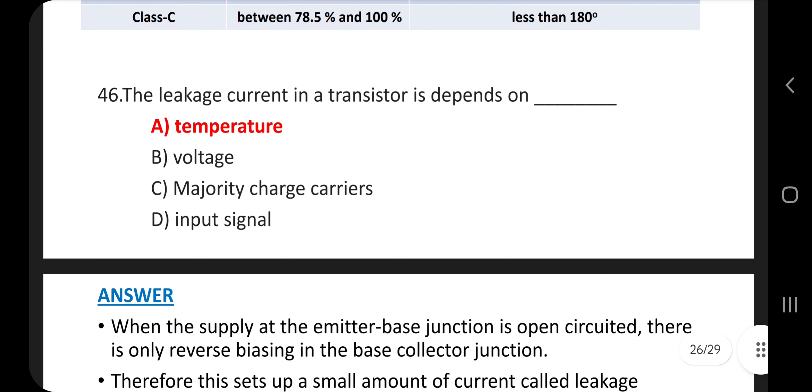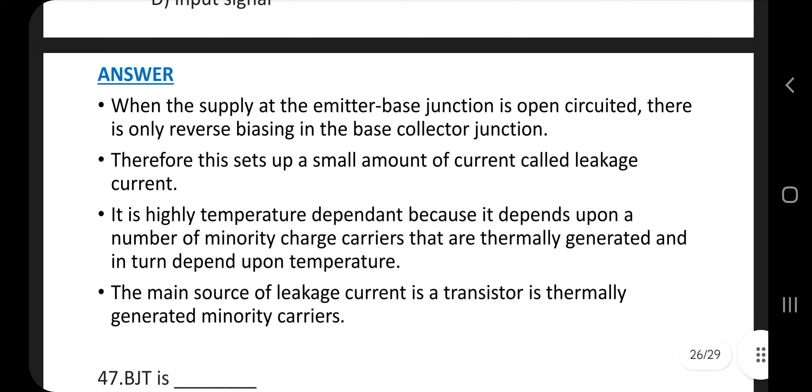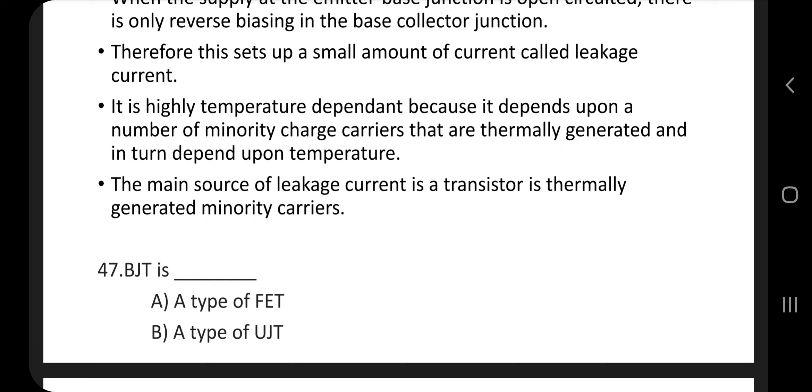Question 46. The leakage current in a transistor depends on, answer is option A, temperature. When the supply at the emitter base junction is open-circuited, there is only reverse biasing in the base collector junction. This sets up a small amount of current called leakage current. It is highly temperature dependent because it depends upon a number of minority charge carriers that are thermally generated and in turn depend upon temperature. The main source of leakage current in a transistor is thermally generated minority carriers.